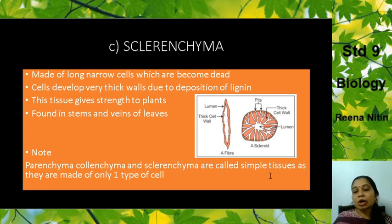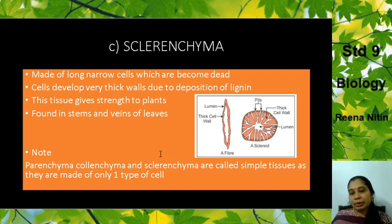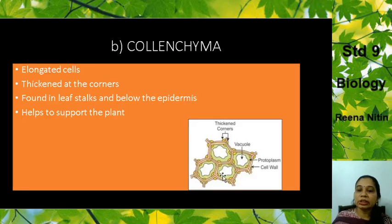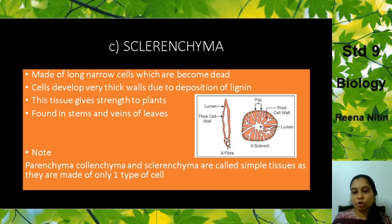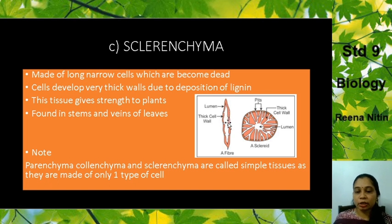Parenchyma, Collenchyma, and Sclerenchyma are called simple tissues as they are made up of only one type of cell. All these three types of supporting tissues are also called simple tissues. If you observe Parenchyma under the microscope, all the cells look similar — they are made up of only one type of cell. That is why they are also known as simple tissues. You will follow the diagram in the textbook.